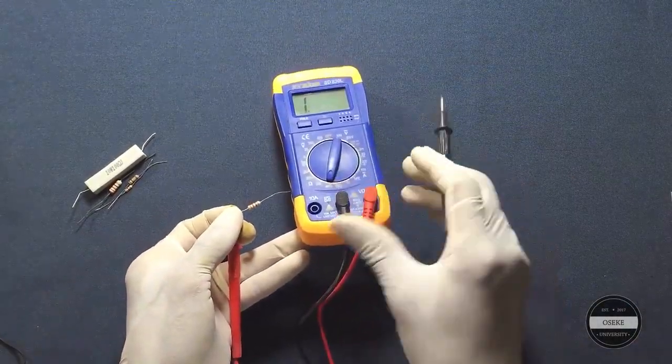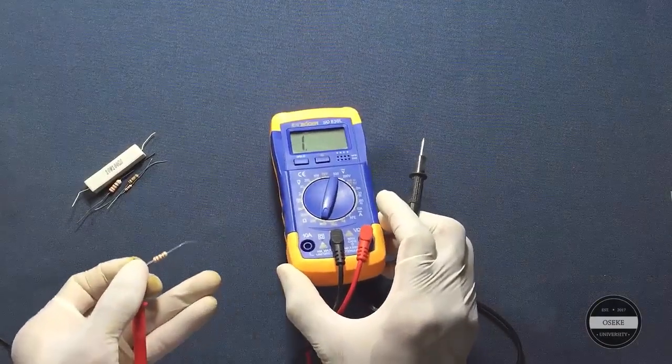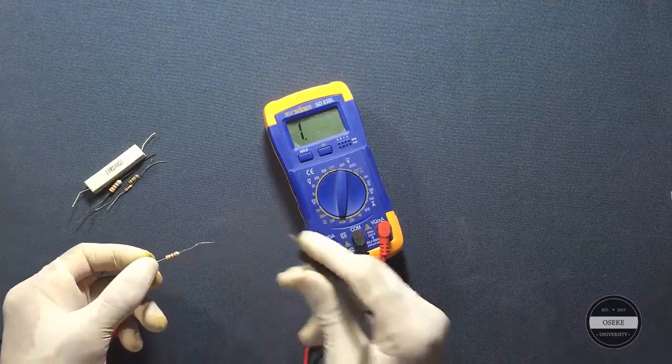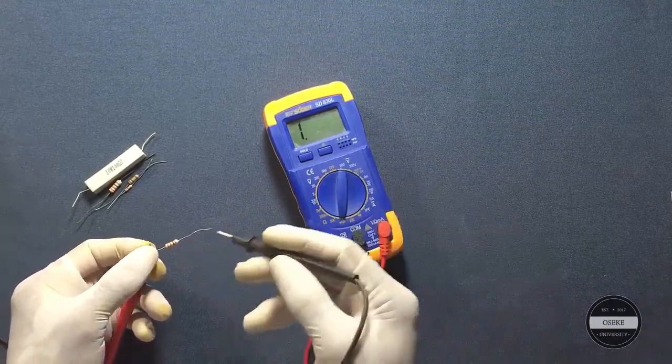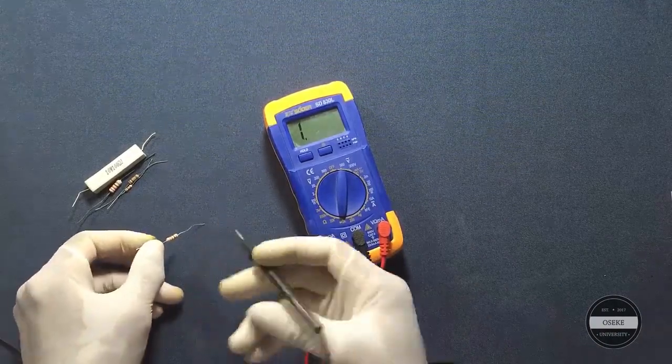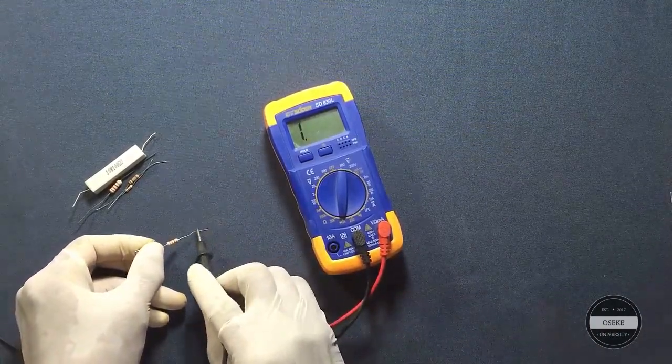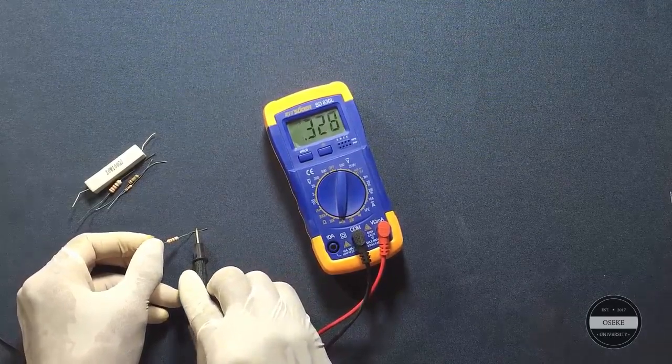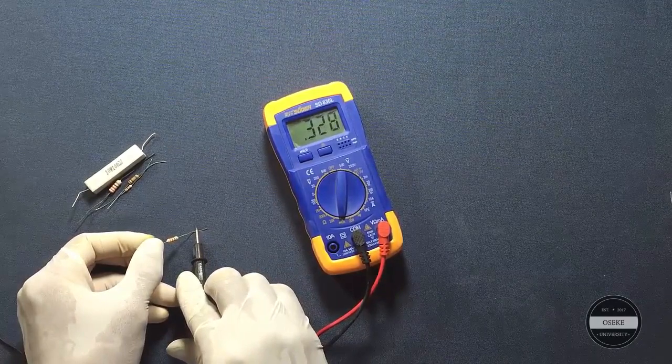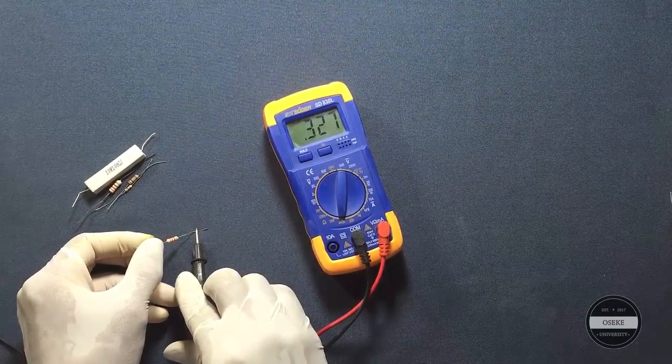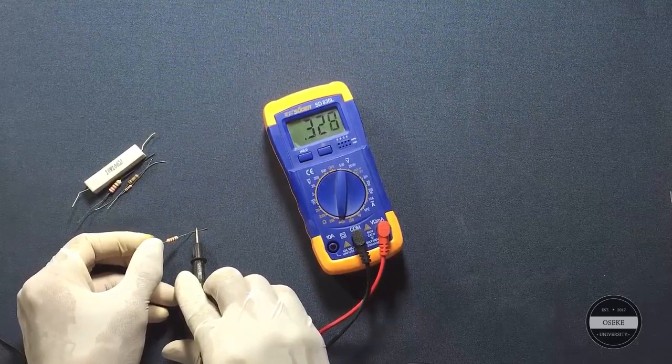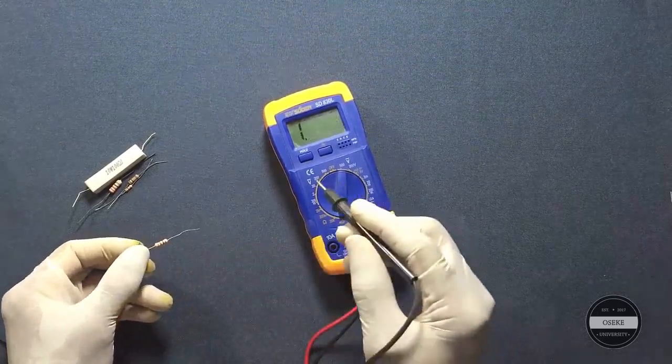Two kilo ohms is much larger than 330 ohms so you're going to see something. I think you will see something. So we'll do that same step. All right, so you're seeing 0.327 or 0.326. Point 0.327.